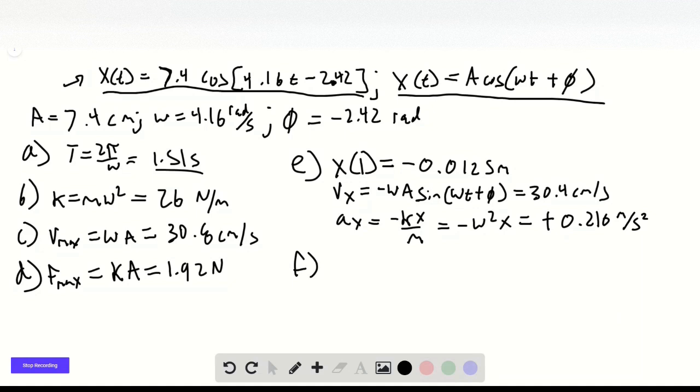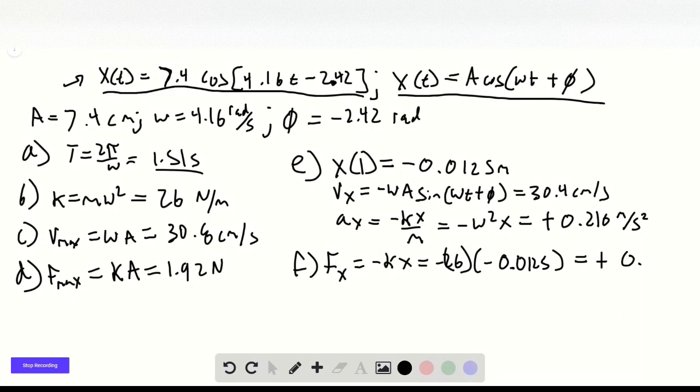Finally, part f, which just asks the force on the mass at that time. Well, that force equals negative kx, which equals negative 26 times negative 0.0125, which equals positive 0.325 newtons.